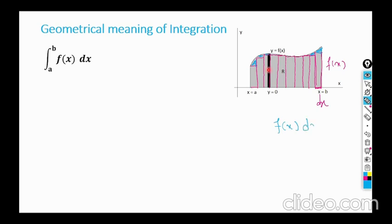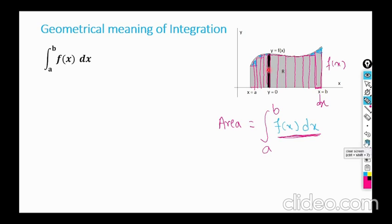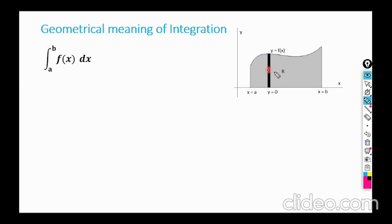The area of one rectangle is f(x) times dx. When dx is infinitesimally small — tending to zero — we break these rectangles into very small ones of very small thickness. That summation is then converted to the integral, giving us the integral of f(x) dx from a to b. It is no longer an approximate area but the exact area under the curve.